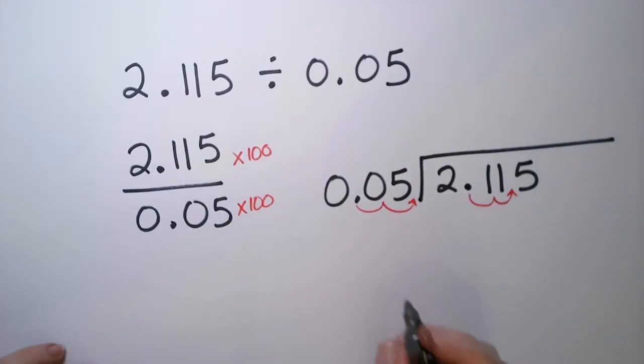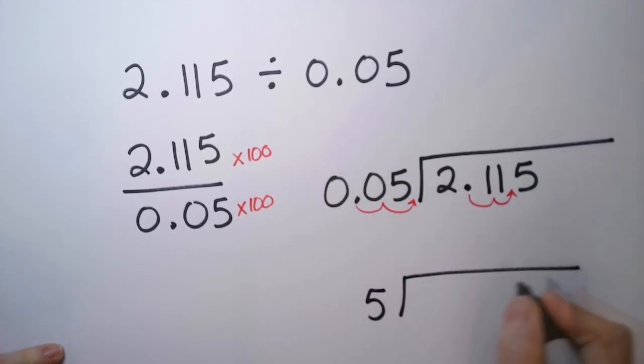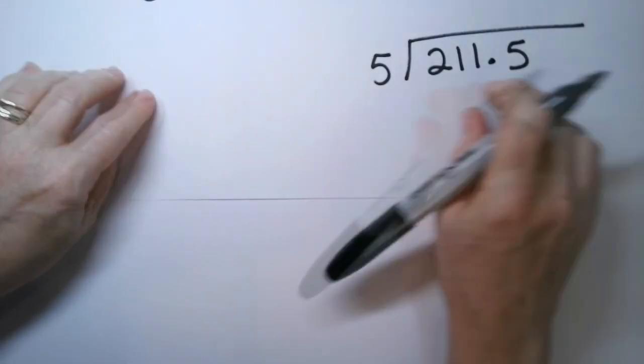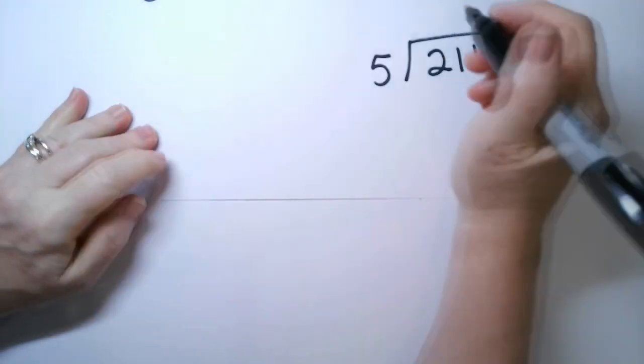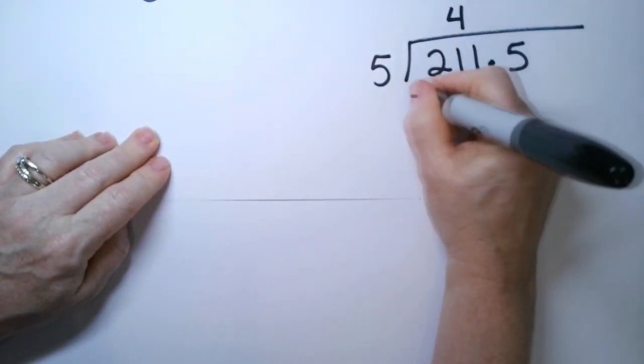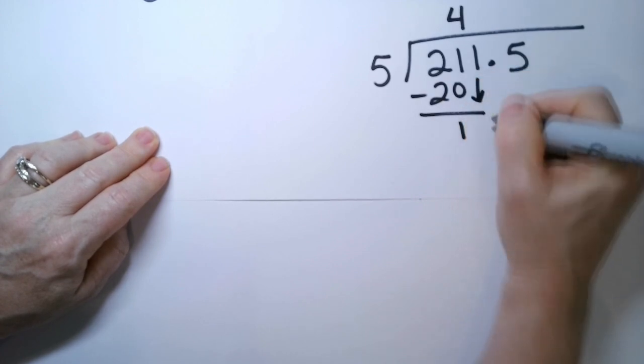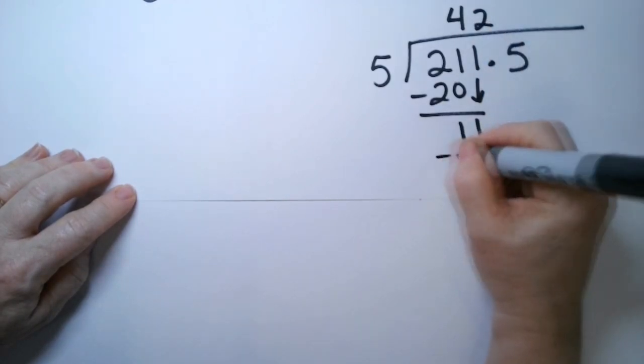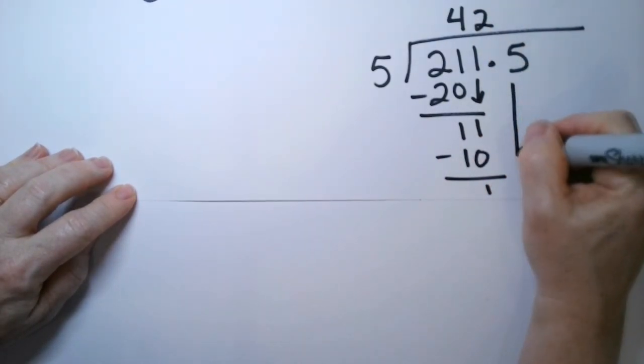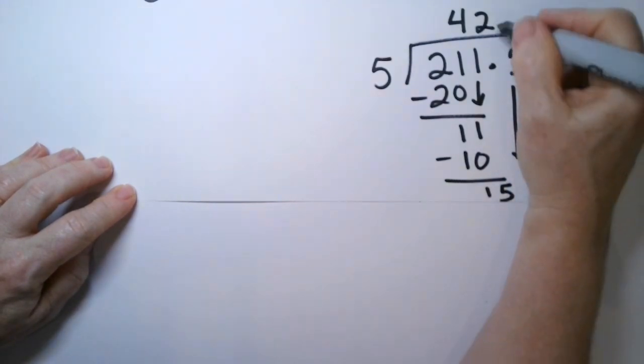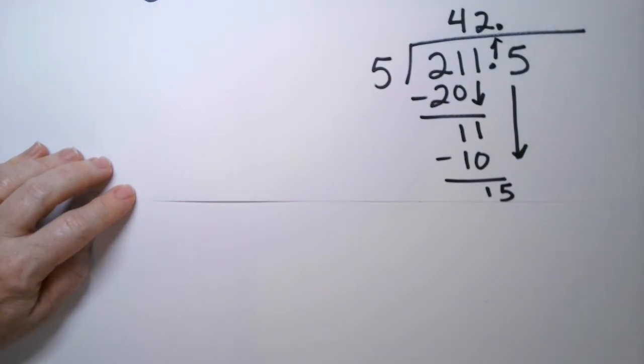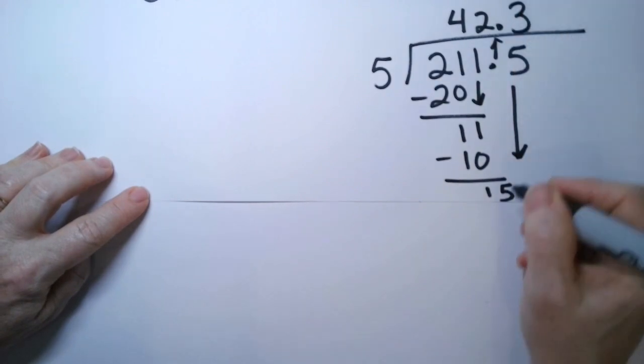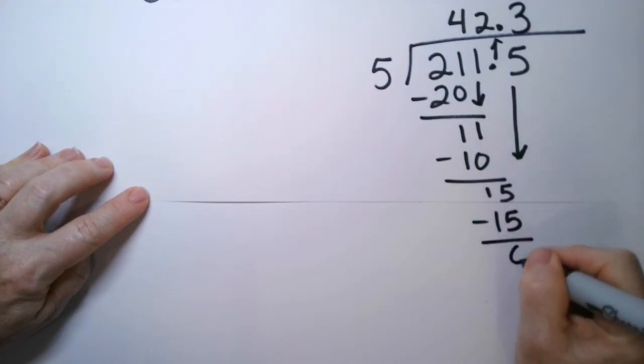So the problem I'm actually going to do is 5 into 211.5. The first thing we're going to do is say 5 doesn't go into 2. 5 goes into 21, 4 times. Minus 20. The difference is 1. Drop that second one down. 5 goes into 11, 2 times. Minus 10 is a 1. Drop down that 5. And if you want to put the decimal point in as you hit it, that's fine. Or you can put it in at the end. And 5 goes into 15, 3 times. And there is no remainder.